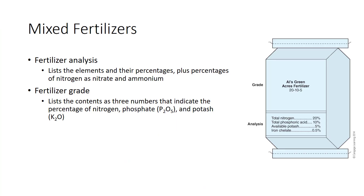The contents of a bag of fertilizer may be listed in two ways. Some bags list fertilizer analysis, which lists the fertilizer elements in the bag and their percent content, as well as percent nitrogen as nitrate and ammonium. Such a list could include any of the 14 mineral elements. All bags of fertilizer should show the fertilizer grade, which indicates the primary nutrient content.